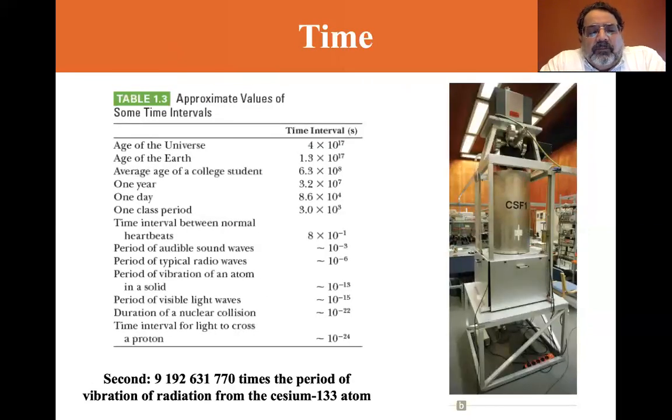Time. The second is 9,192,631,770 times the period of vibration of radiation from the cesium-133 atom. We all know what a second is. There's 60 seconds in a minute, 3,600 seconds in an hour. Let's look at some of these, the age of the universe, 4 times 10 to the 17 seconds. One year is 3.2 times 10 to the seventh seconds. One day, 8.6 times 10 to the fourth. The period of audible sound waves 10 to the minus three seconds. The period of visible light waves is 10 to the minus 15 seconds. And time interval for light to cross a proton is 10 to the minus 24.